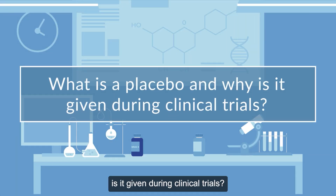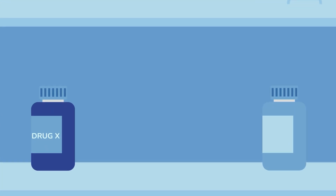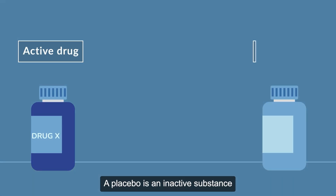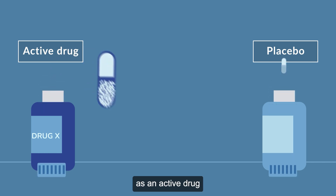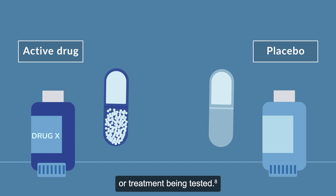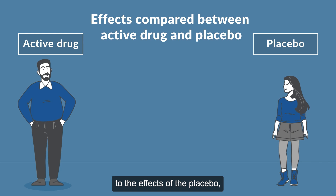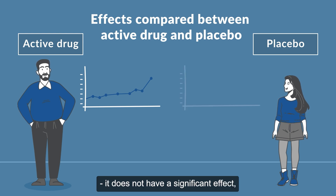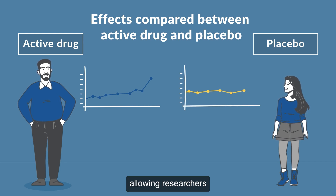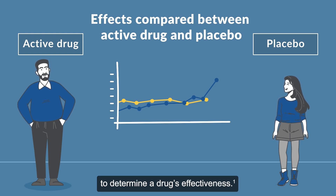What is a placebo and why is it given during clinical trials? A placebo is an inactive substance that looks and is used in the same way as an active drug or treatment being tested. The effects of the active drug or intervention are compared to the effects of the placebo or inactive substance. Because a placebo isn't an active treatment, it does not have a significant effect, allowing researchers to compare the results from it to those from the actual drug to determine a drug's effectiveness.